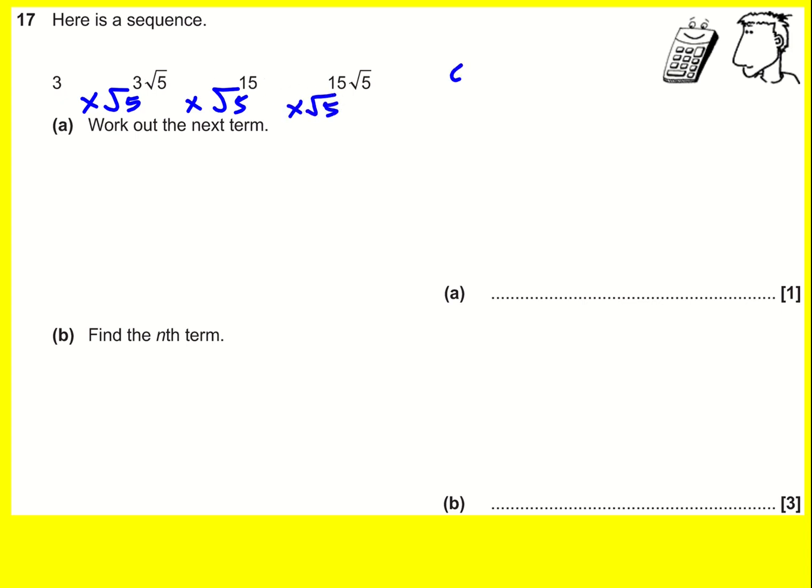I also times by root 5. This is a geometric sequence and the next term is therefore going to be 15 root 5 times root 5, which is 15 times 5, which is 75.